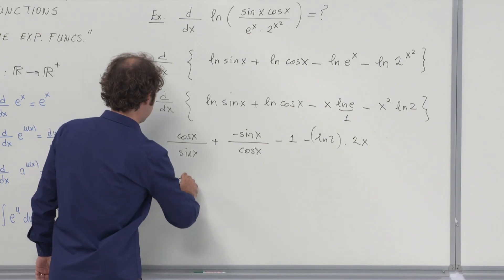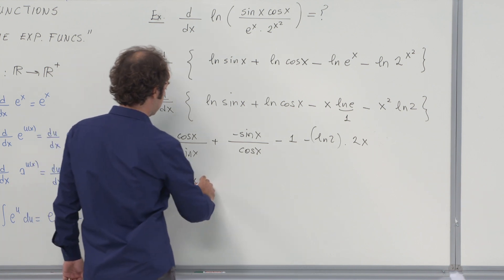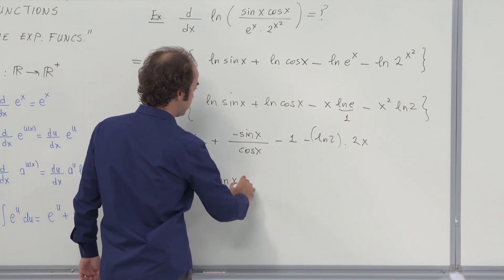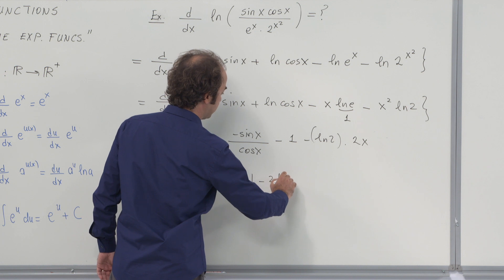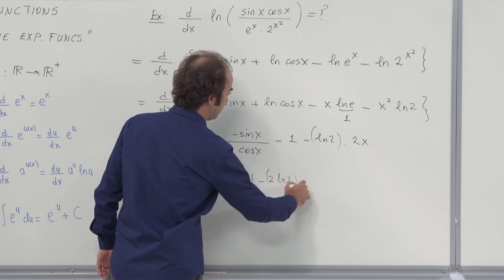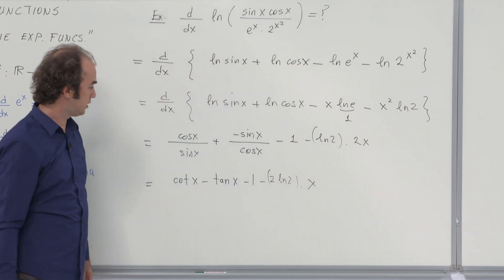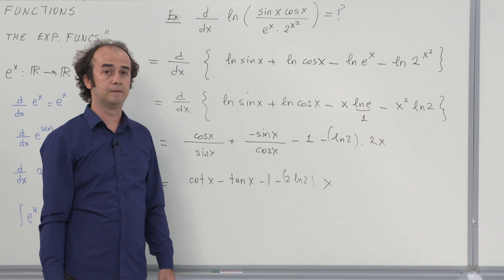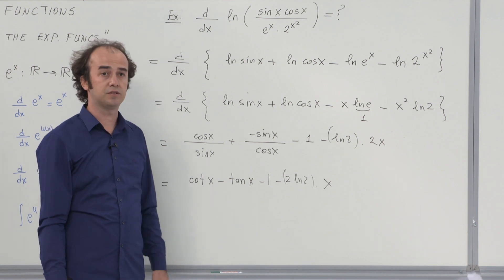I can rewrite this as cot(x) minus tan(x) minus 1 minus 2 ln(2) x. That finalizes the solution for this question.